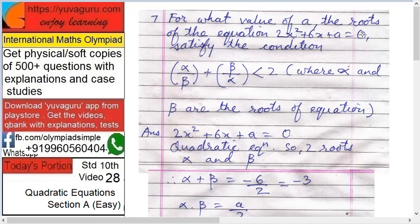Next, for what value of a, the roots of the equation 2x square plus 6a plus 6x plus a equals to 0...